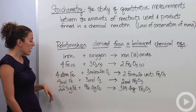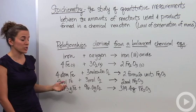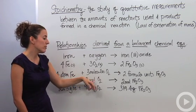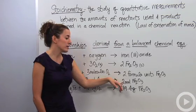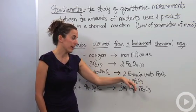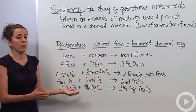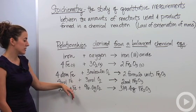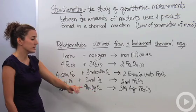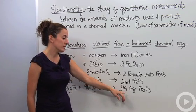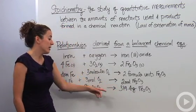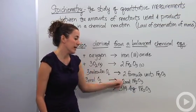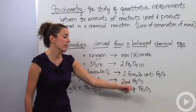Going further, we can change those into moles — so there are molar relationships. If we have four moles of iron reacting with three moles of oxygen gas, we get two moles of iron three oxide. Using molar masses from the periodic table, we have 223 grams of iron reacting with 96 grams of oxygen, giving 319.4 grams of iron three oxide. The mass of the reactants will equal the mass of the products.